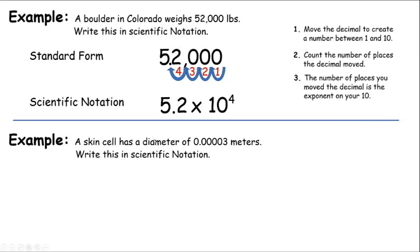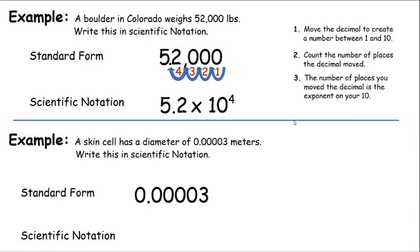Here's another example. A skin cell has a diameter of 0.00003 meters. This is a really tiny, tiny number. It is written in standard form. In order for this to be in scientific notation, I'm going to have to take this decimal, and I need to move it so that my number is between 1 and 10. So I'm going to start moving that decimal. One place, well, 0.0003 is still smaller than 1. I move it a second time, well, 0.003 is still too small. I move it a third time, a fourth time, 0.3 is still smaller than 1. So I'm going to have to move it one more time. Now I have this number 3. That's where I want my decimal to be at.